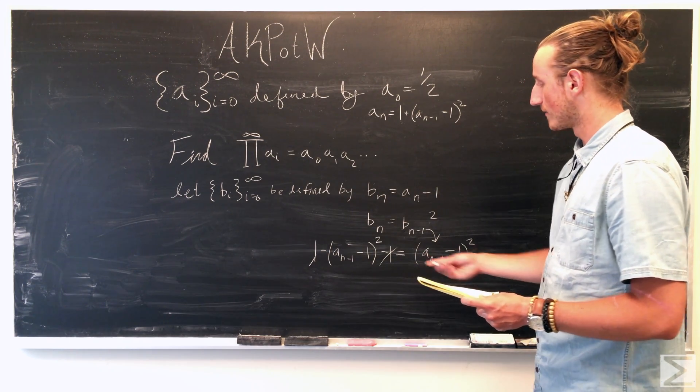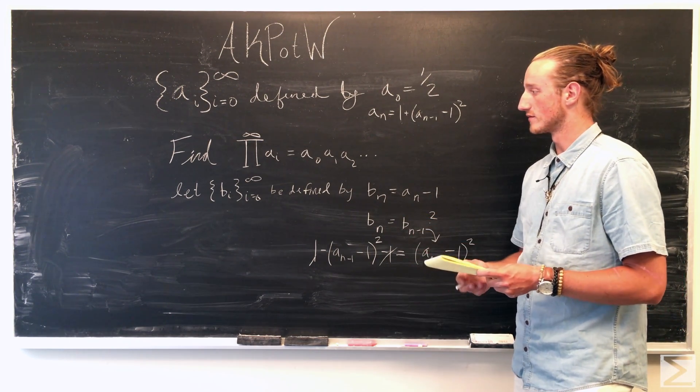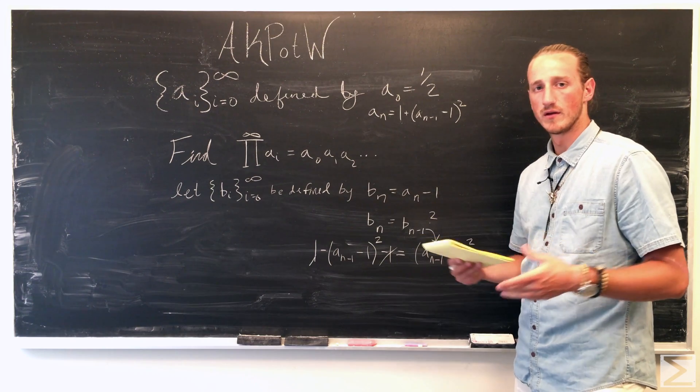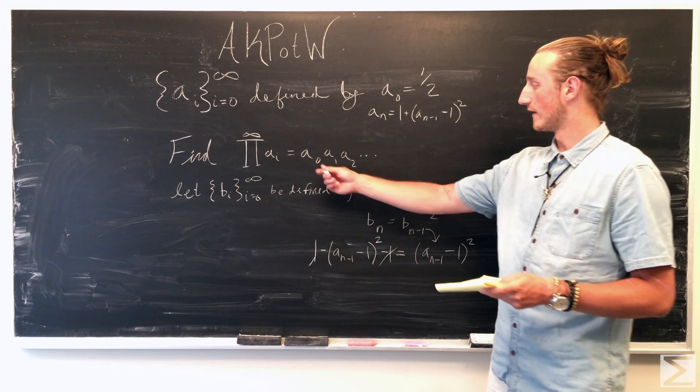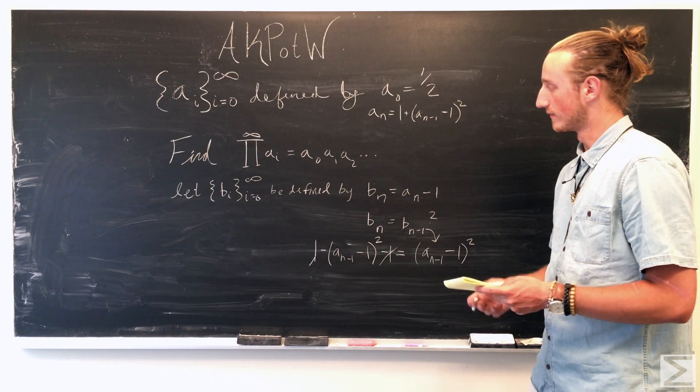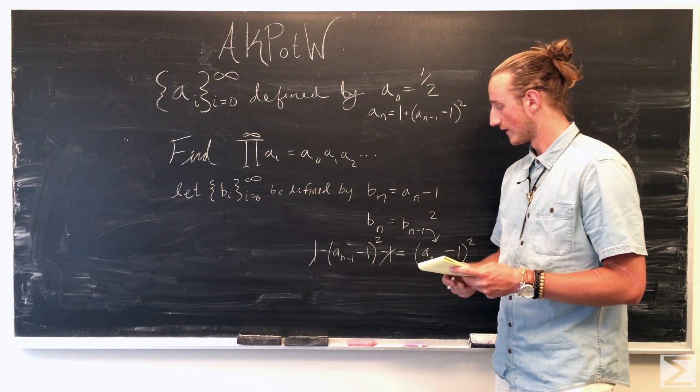So once we have that new, easier, simplified version b of n, we could now represent the infinite product of a sub one, a sub two, that product.